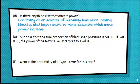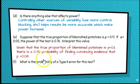Suppose that the true proportion of blemished potatoes is 11%. If alpha is 0.05, the power of a test is 0.76. They calculated it for us. Now it's asking us to interpret this value. So the true proportion is 11%. I need that, and I need this as a probability. So here's how I would interpret this. Given that the true proportion of blemished potatoes is 11%, there is a 0.76 probability of finding convincing evidence that the true proportion is greater than 8%. This is my alternative hypothesis. This is the actual. This is the power that was calculated for me.